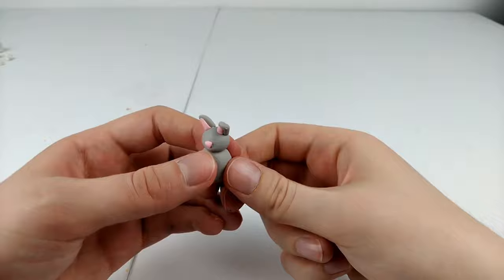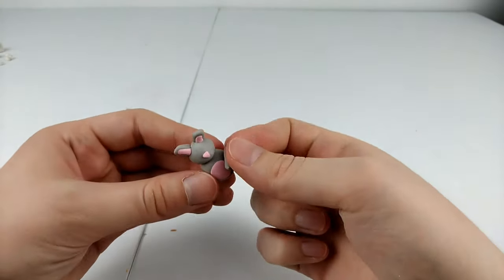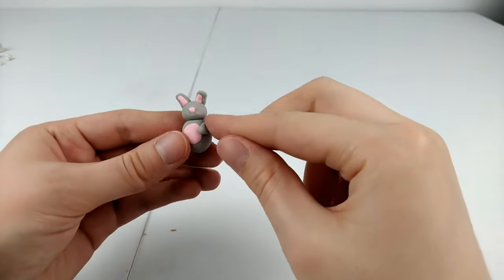Then we'll take a small ball of grey clay, roll it out into a log and pinch one end and we'll use that for the arm and make another for the other side.